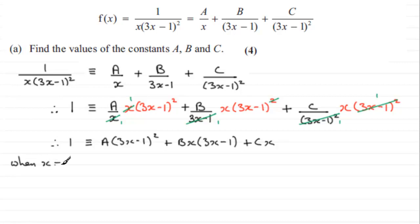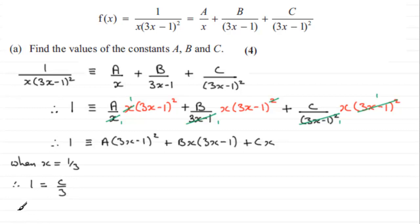When x equals one third, the left side is 1. The first term goes to zero, the b term has b times one third times zero which is zero, and we're left with c times one third, which equals 1. Multiplying both sides by 3 gives 3 equals c, so c equals 3. That's the first constant found.